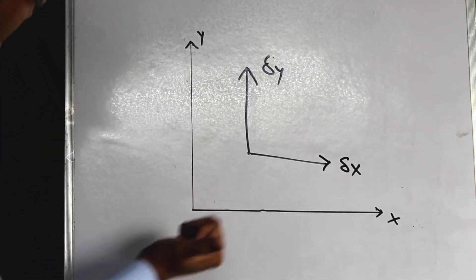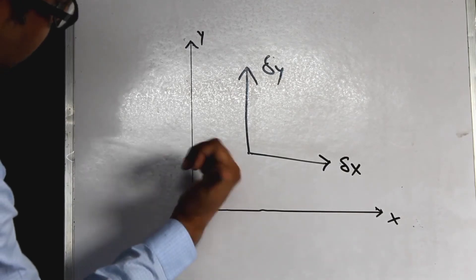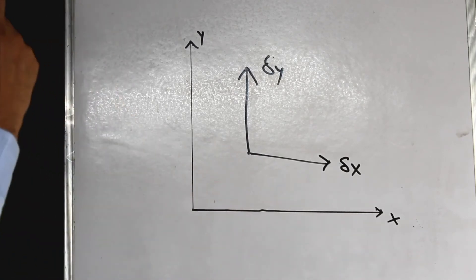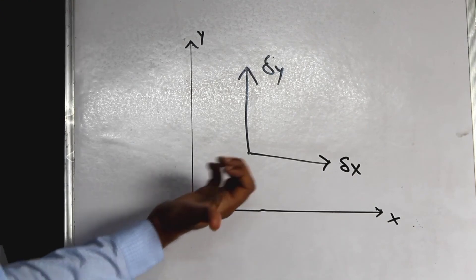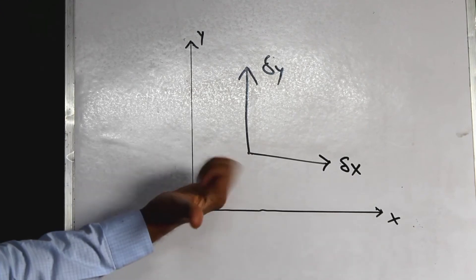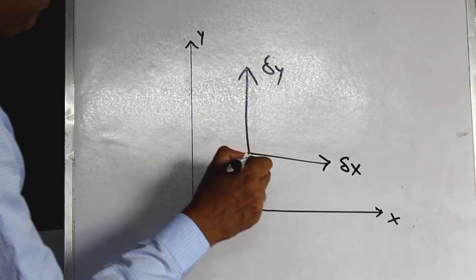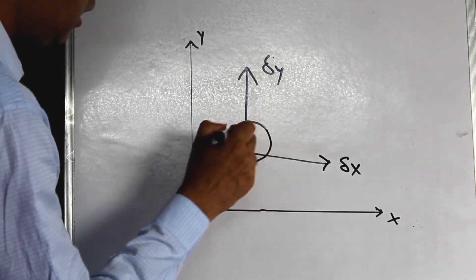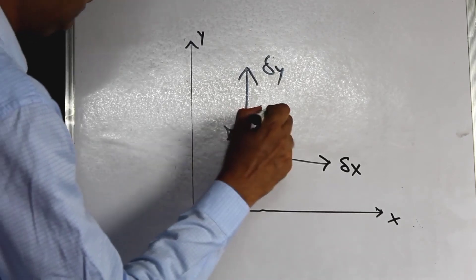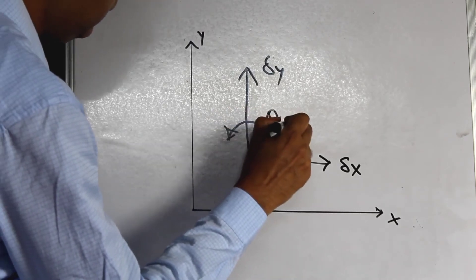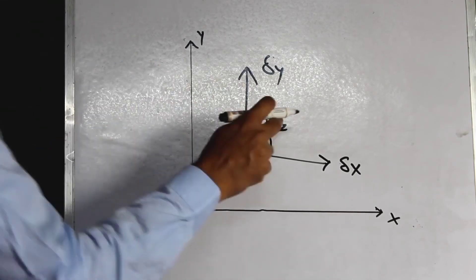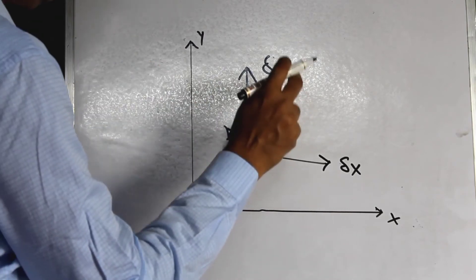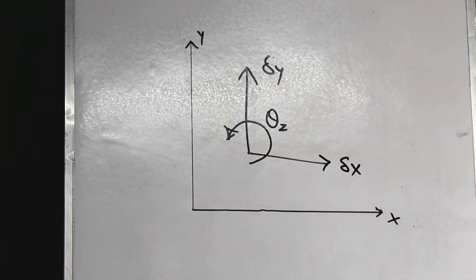But the rotation about the z-axis, theta z, is something that I can easily draw on this board. So theta z, this rotational degree of freedom, is an in-plane degree of freedom.